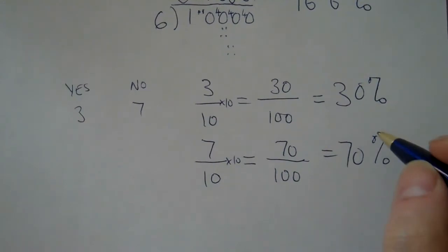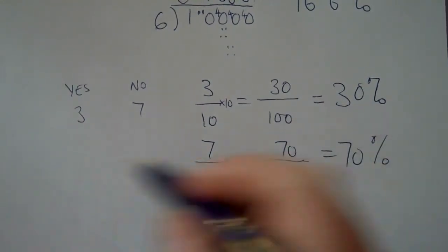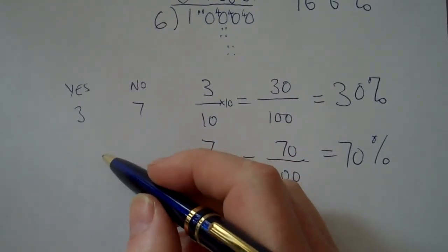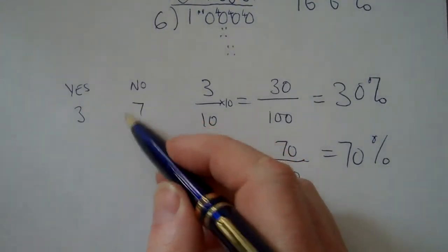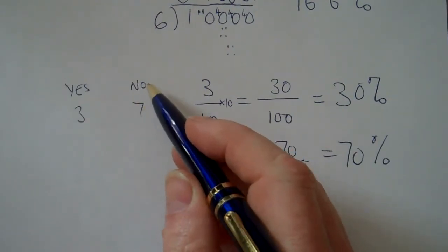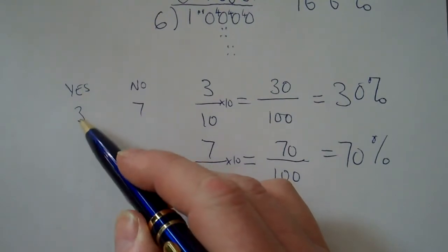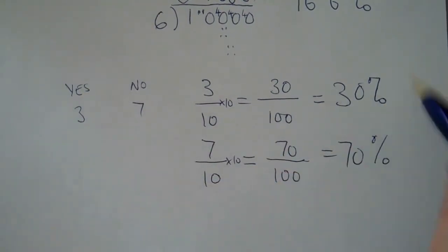We could have done it another way, couldn't we? Instead of working out the fraction again, we could have said, well, we asked ten people and the seven people that said no must have been the total ten minus the three people that said yes. Ten minus three is seven.